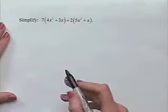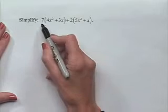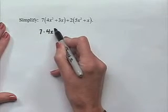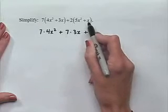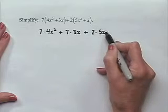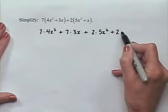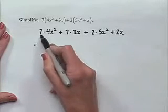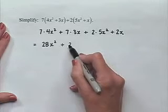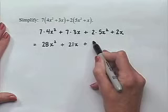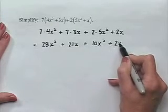Now let's look at another simplification problem. Simplify 7 times 4x squared plus 3x plus 2 times 5x squared plus x. We use the distributive property: 7 times 4x squared plus 7 times 3x, plus 2 times 5x squared plus 2 times x. Multiplying: 7 times 4 is 28, giving 28x squared; 7 times 3 is 21, giving 21x; 2 times 5 is 10, giving 10x squared; and the last term is 2x.